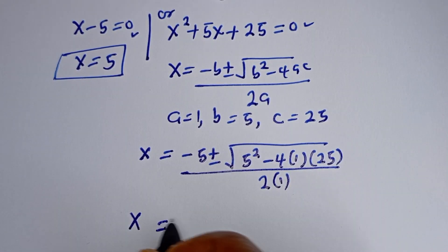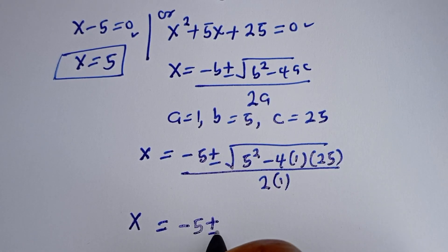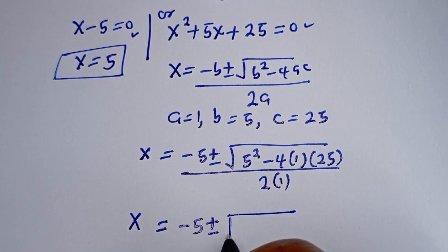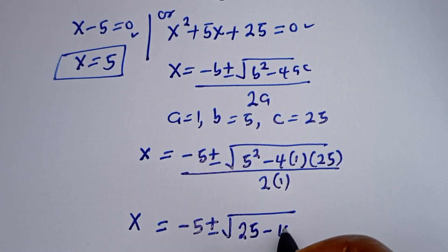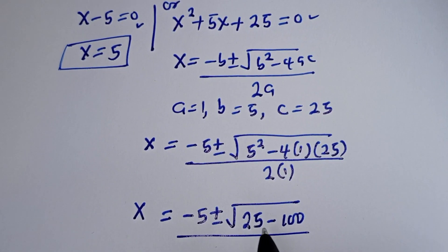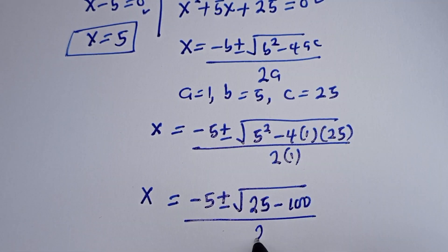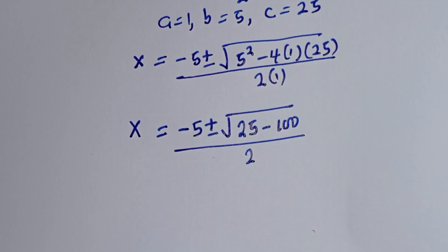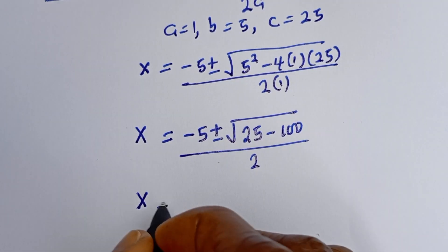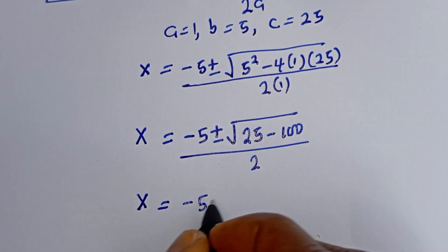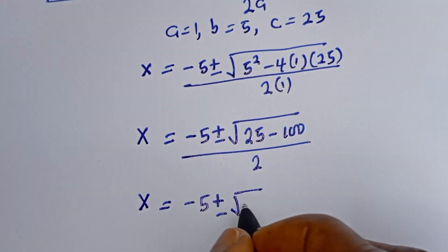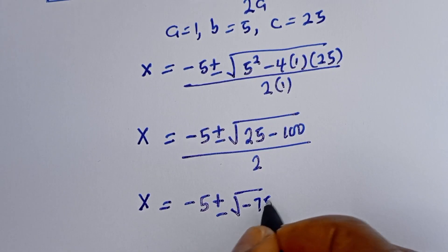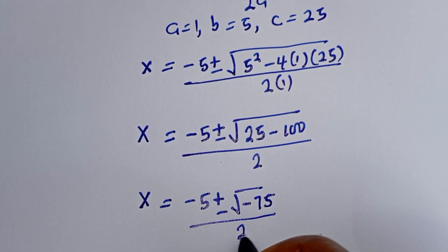S is equal to negative 5 plus or minus square root of 25 minus 4 multiplied by 1 multiplied by 25, which is 100, divided by 2. So S is equal to negative 5 plus or minus square root of 25 minus 100, that is negative 75, divided by 2.